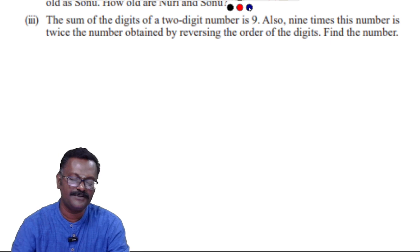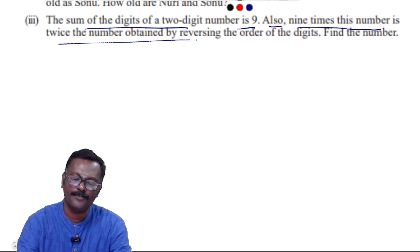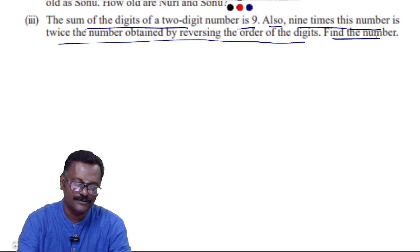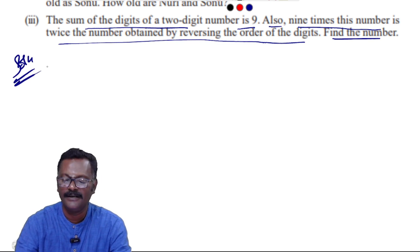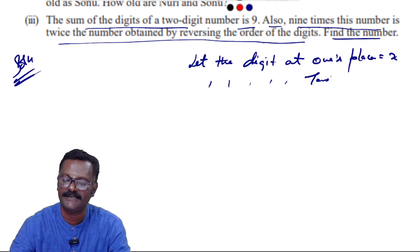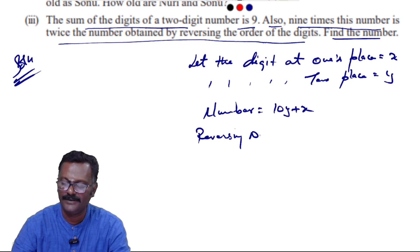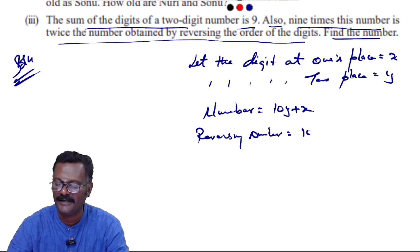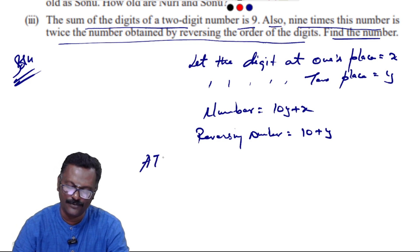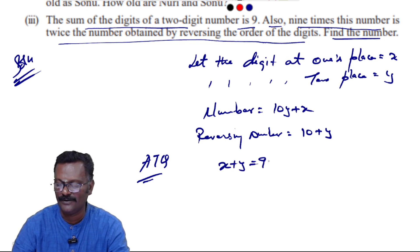Third sub-problem: The sum of the two digits of a two-digit number is 9. Also, 9 times this number is twice the number obtained by reversing the order of the digits. Find the number. Let the digit at one's place be x, and the digit at ten's place be y. The number formed is 10y + x, and the reversed number is 10x + y.